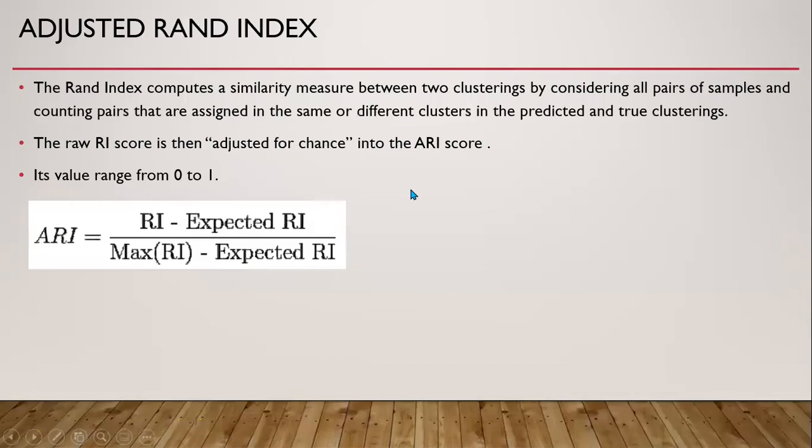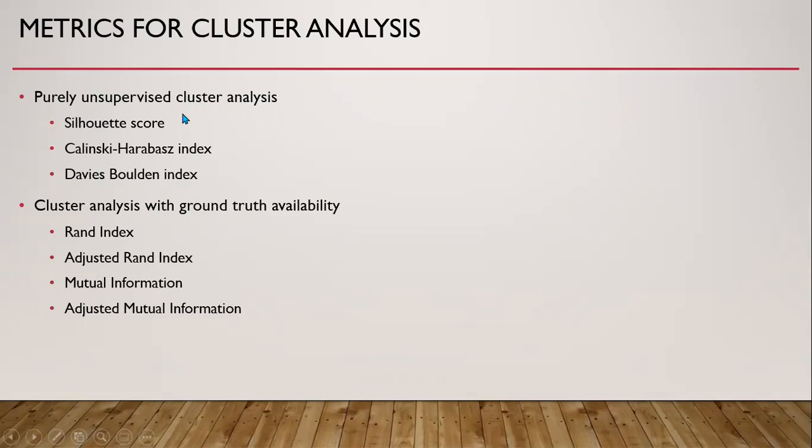In short, there are two types of metrics for cluster analysis. When we don't have ground truth, we use three indices: Silhouette score, Calinski-Harabasz index, and Davies-Bouldin index. When we have ground truth, we use the Rand index, adjusted Rand index, mutual information, and adjusted mutual information. This is all for today. Thank you very much.